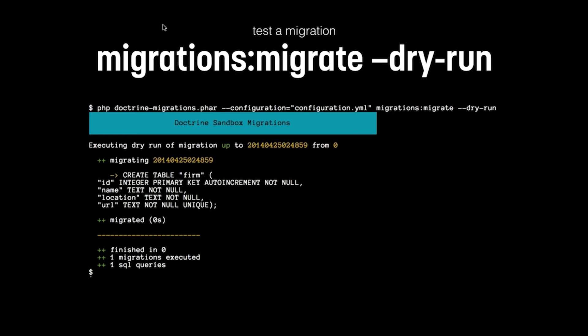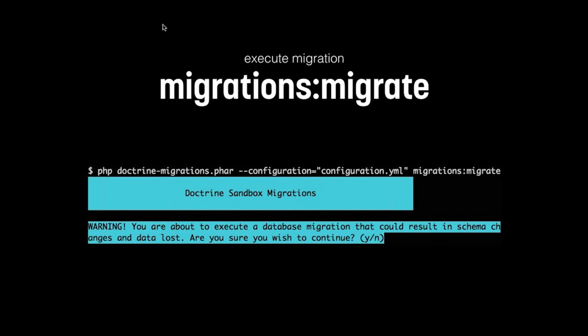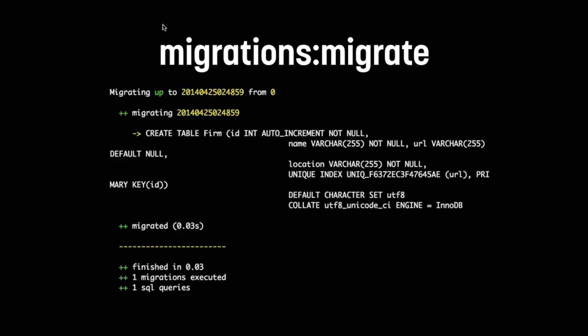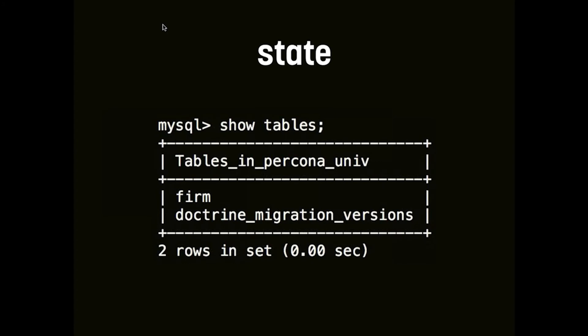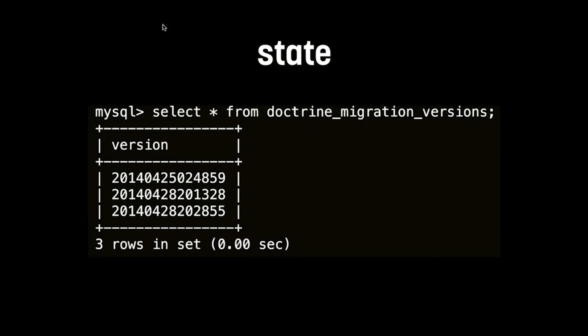You can test it with a dry run, which shows you what SQL statements will be executed. After that, you run migrations:migrate, which pushes the SQL changes to the database. Doctrine knows which migrations have already been executed by creating a table — that's the table name specified in the YAML — called 'doctrine_migration_versions'. It inserts the timestamp of each migration so it knows what has already been pushed.